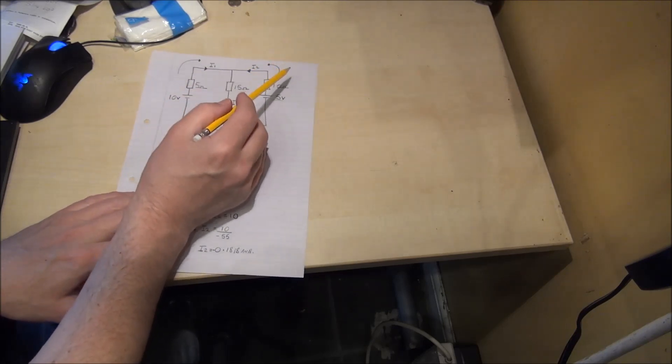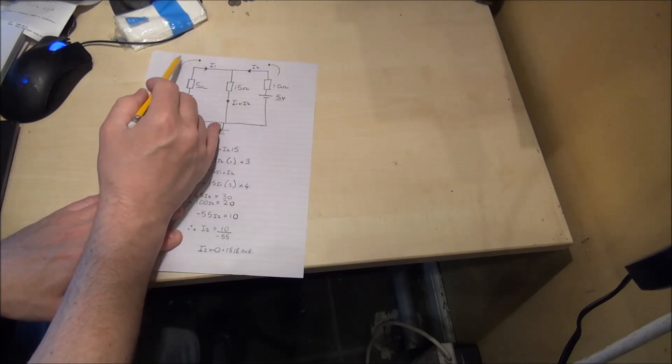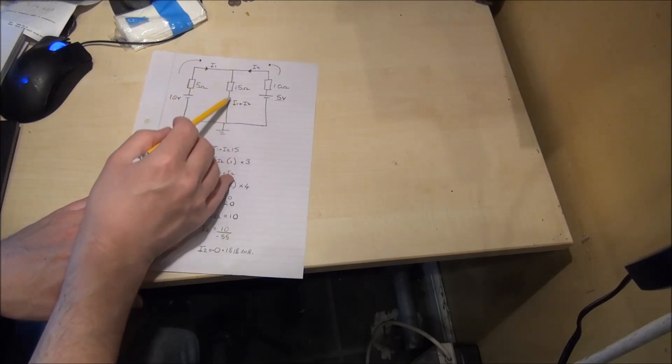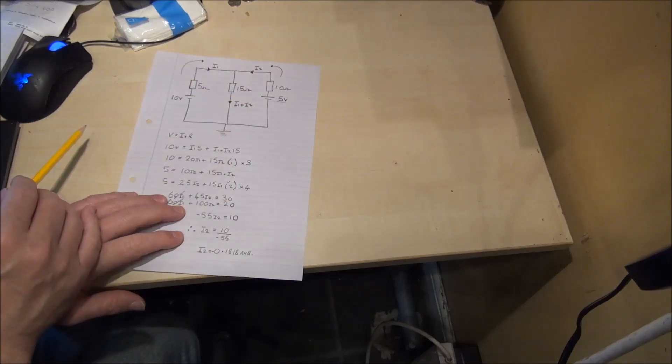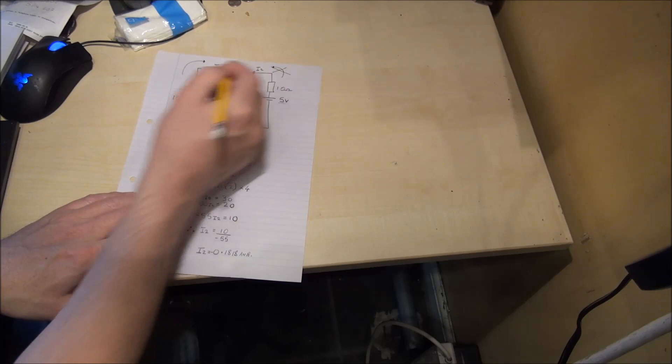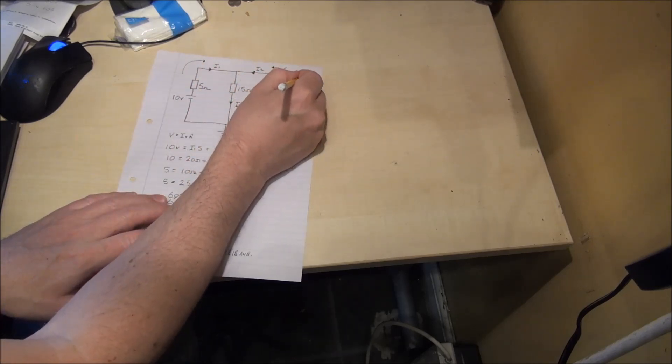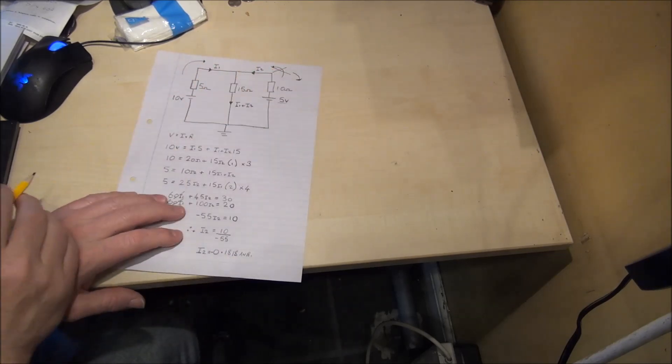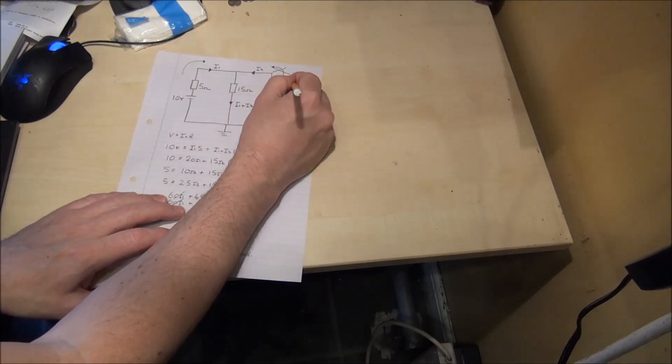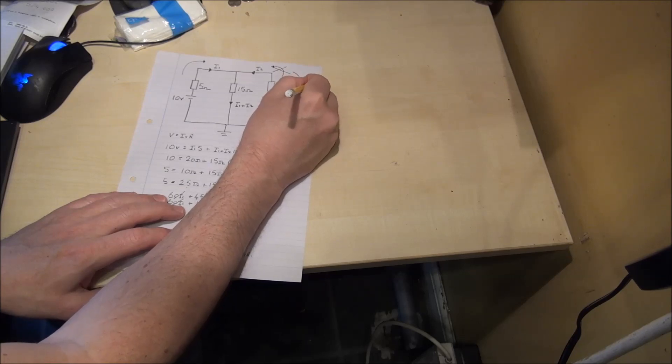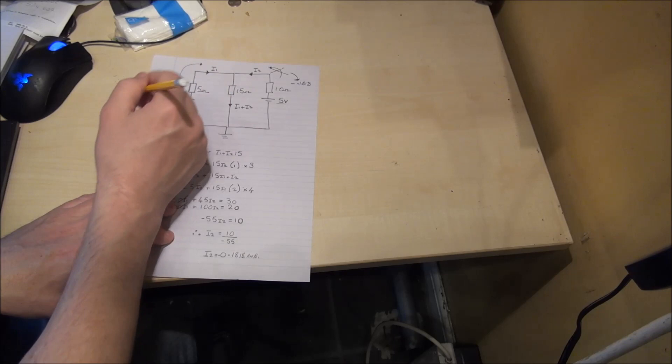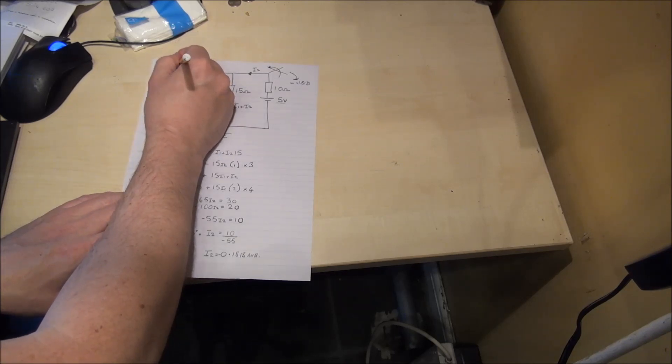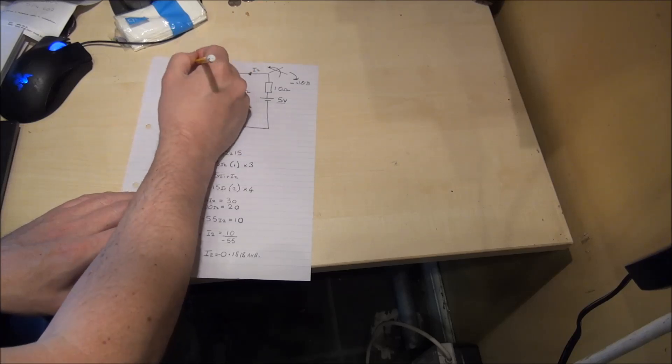We'll come back to our original drawing now. And you'll notice I said that we draw in the directions I1 and I2 as if we have currents both flowing through the load resistor. But we've just proved through Kirchhoff's law that actually I2 does not flow in this direction. It flows in the minus direction, and is equal to minus 0.1818. I1 flows in its original direction and is 0.636 Amps.